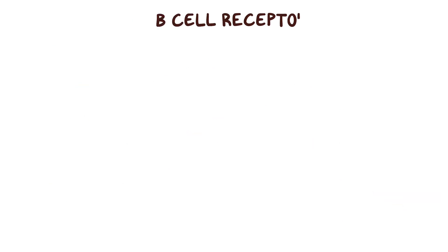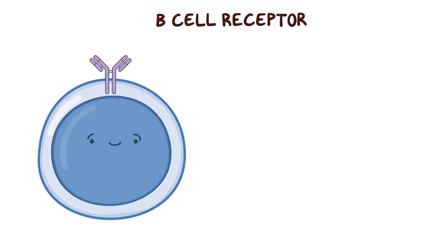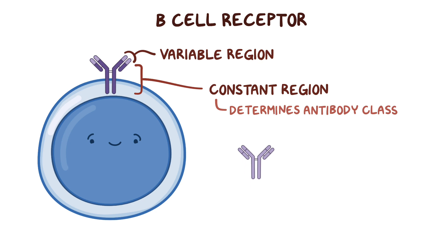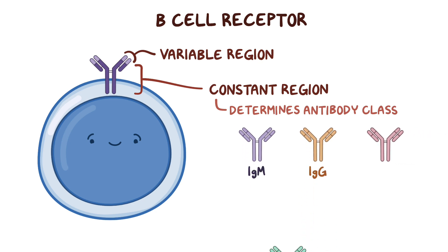The B cell receptor is essentially an antibody, except that it's attached to the surface of the B cell. Each B cell receptor or antibody has two general parts: the variable region, which binds antigen, and the constant region, which determines the specific antibody class — IgM, IgG, IgA, IgD, or IgE.